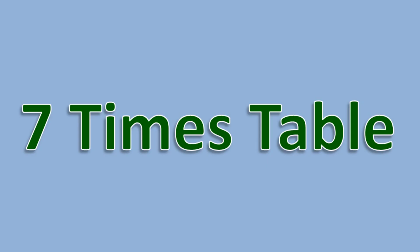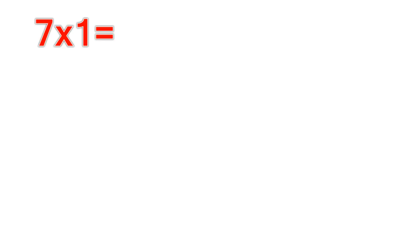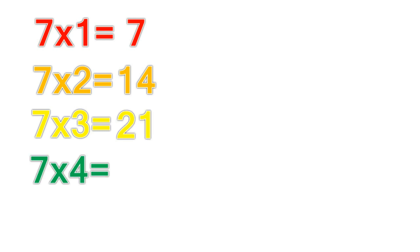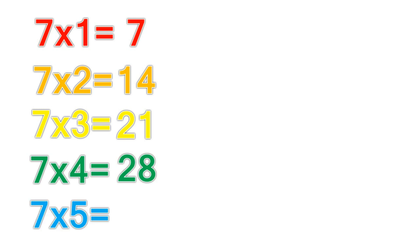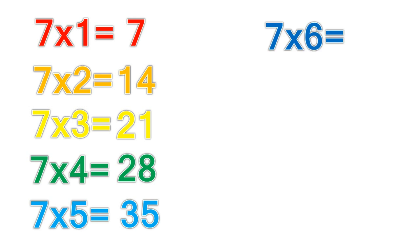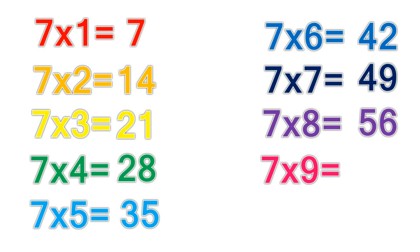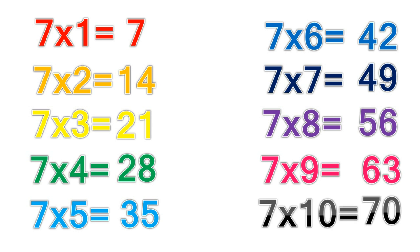7 times table. 7 times 1 equals 7. 7 times 2 equals 14. 7 times 3 equals 21. 7 times 4 equals 28. 7 times 5 equals 35. 7 times 6 equals 42. 7 times 7 equals 49. 7 times 8 equals 56. 7 times 9 equals 63. 7 times 10 equals 70.